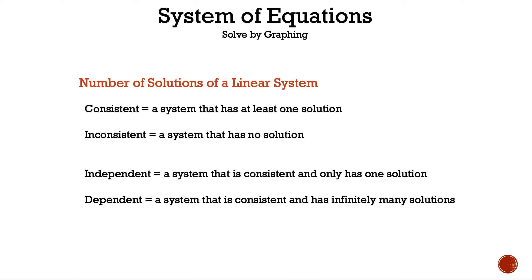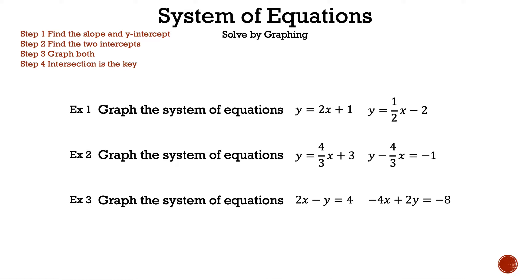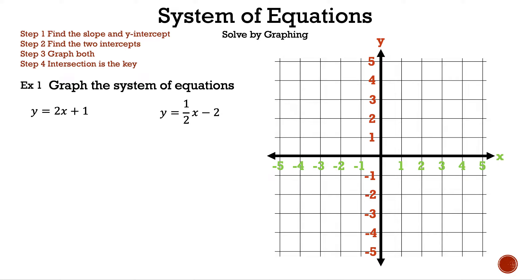Now let's take a look at the examples we're going to discuss in today's video. Let's take a closer look at example one. Let's read the steps. Step one: find the slope and y-intercept. Step two: find the two intercepts. Step three: graph both. Step four: intersection is the key.